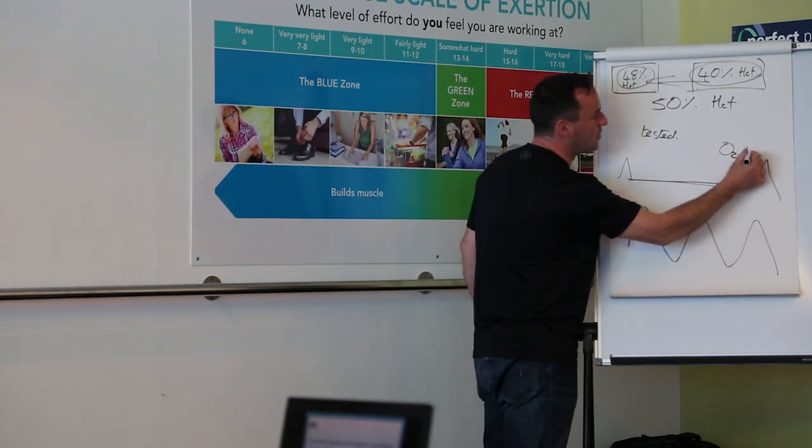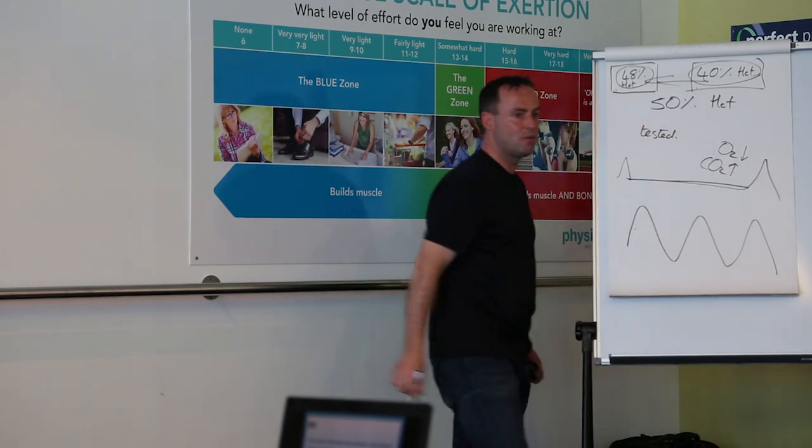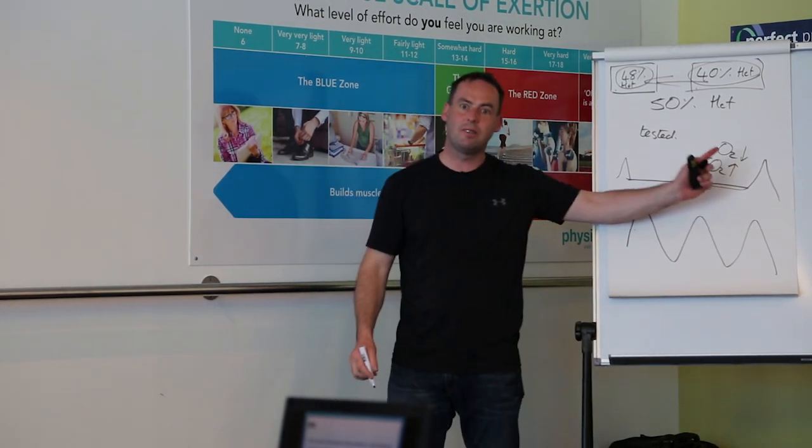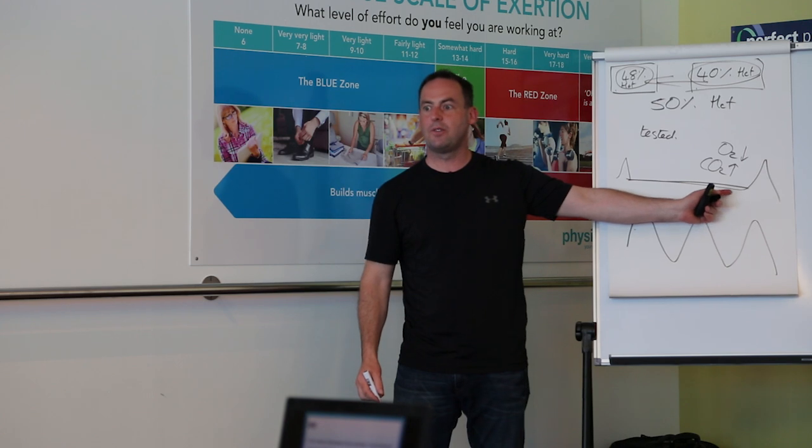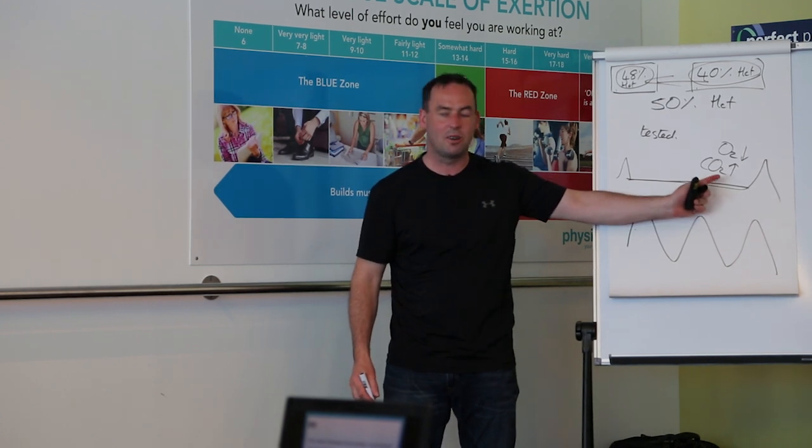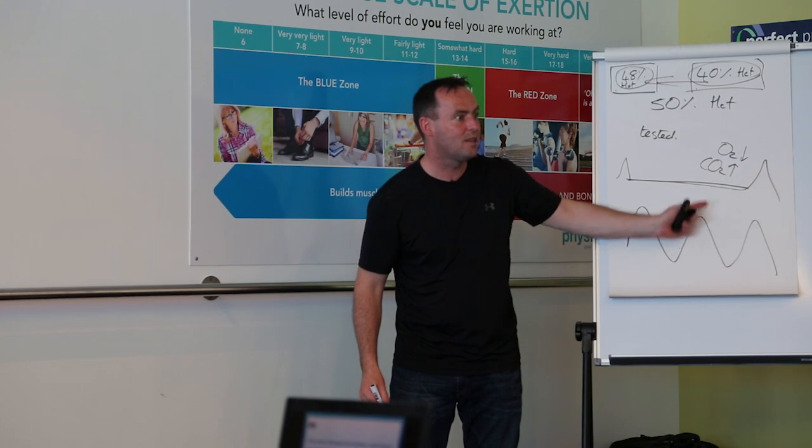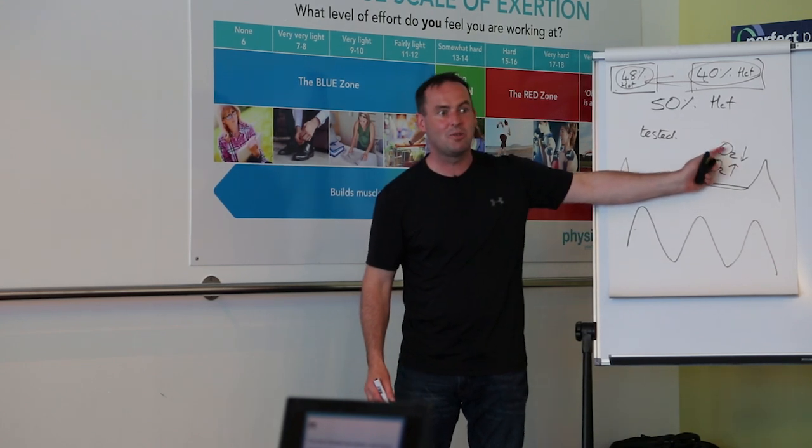Their oxygen levels are dropping, but their carbon dioxide levels increase. Their carbon dioxide levels increase causes a right shift of the oxyhemoglobin dissociation curve. So they're getting more oxygen to the cells to help counter the desaturation.